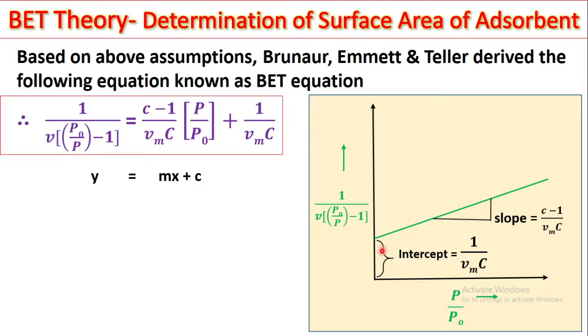This intercept is equal to 1 upon Vm into C. Here C is the intercept which is equal to 1 upon Vm into C and the slope is equal to C minus 1 upon Vm into C.